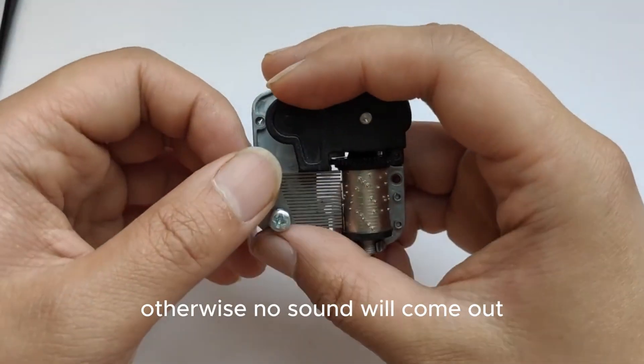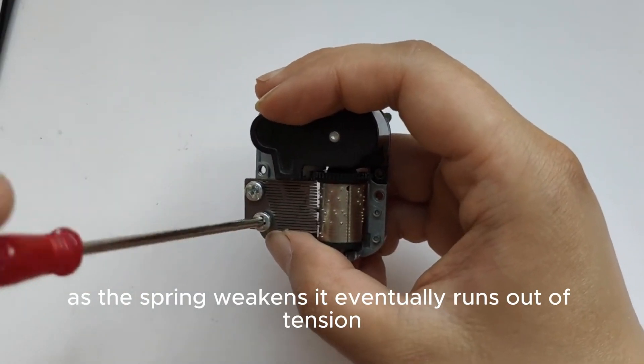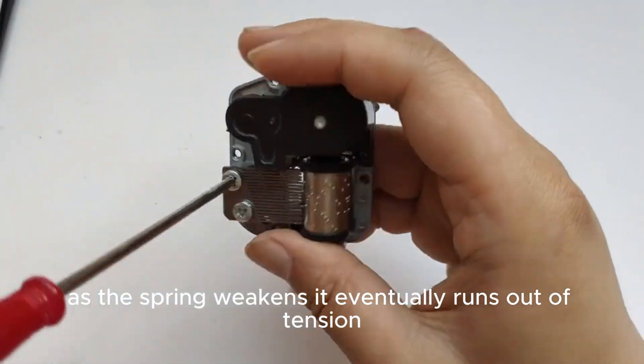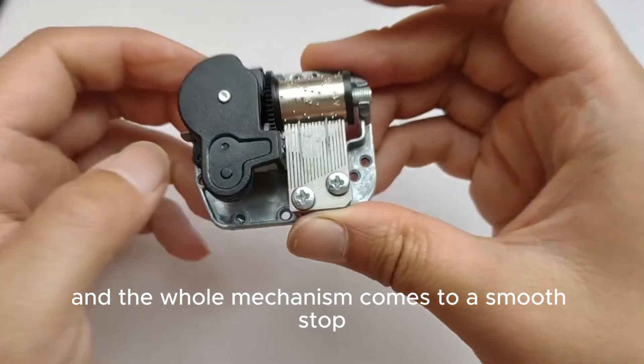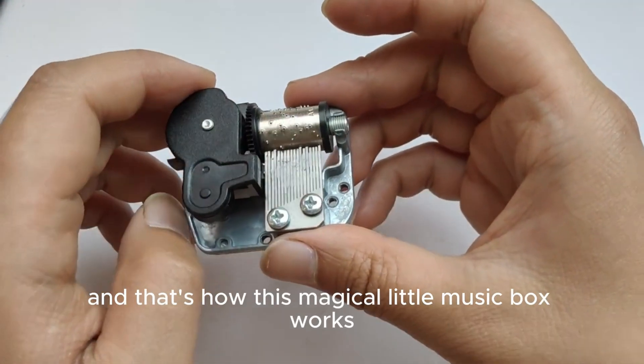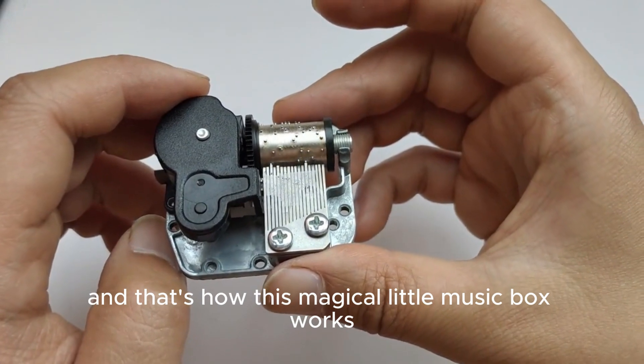As the spring weakens, it eventually runs out of tension. When that happens, the comb stops vibrating and the whole mechanism comes to a smooth stop. And that's how this magical little music box works.